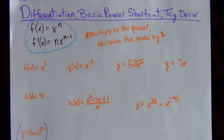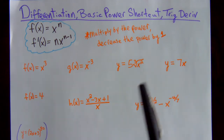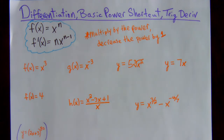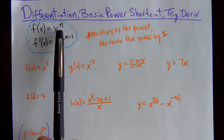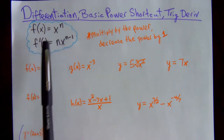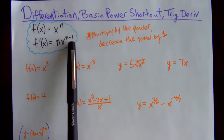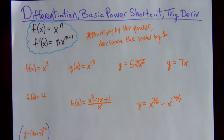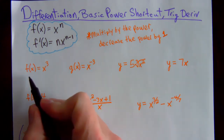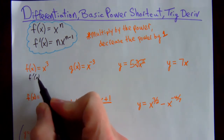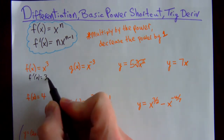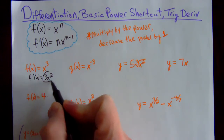We are going to take derivatives using the basic power rule shortcut. If you have a variable raised to a number, x to the n, when you take the derivative it's going to be nx to the n minus 1. You multiply by the power and decrease the power by 1. Let's do several quick examples — you multiply by that power and decrease that power by 1.